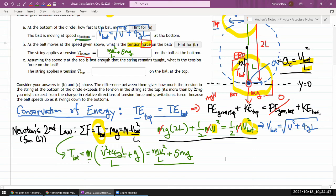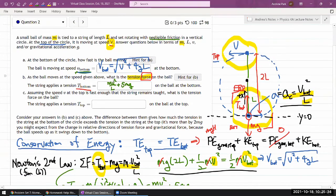Assuming speed at the top is fast enough that the string remains taught. What is the tension force on the ball? I see. I think they want me to answer tension force at the top in terms of the speed at the top. So let me do that. I thought otherwise the answer was too simple. Tension at the top equals zero. But that's at a minimum speed of V. And for this question, they are not asking for minimum speed of V. So I have to go through the same steps that I went through for part B.